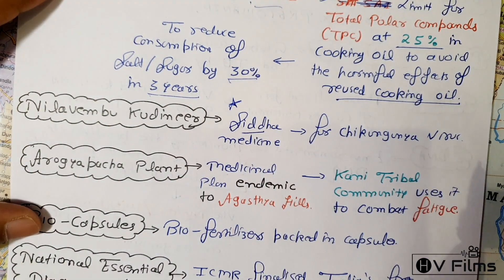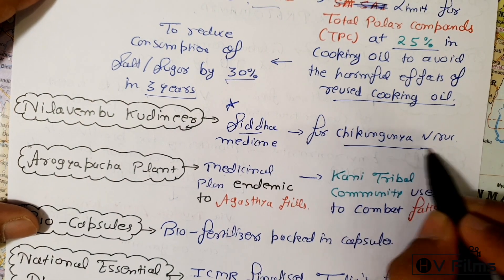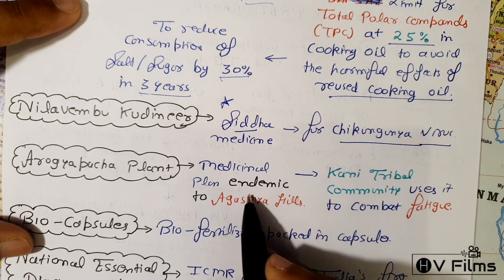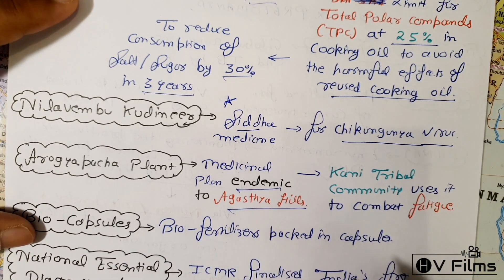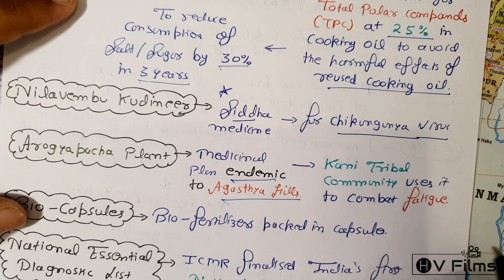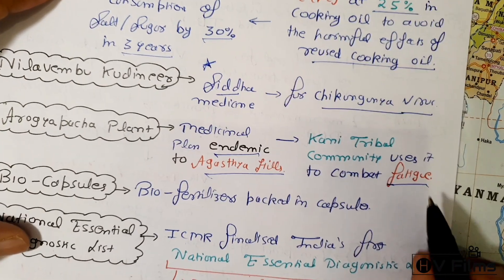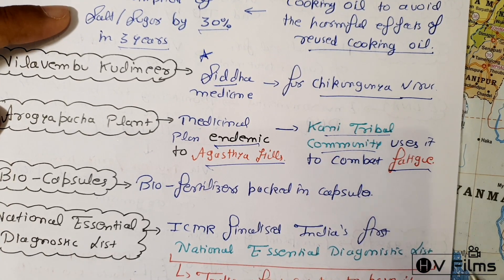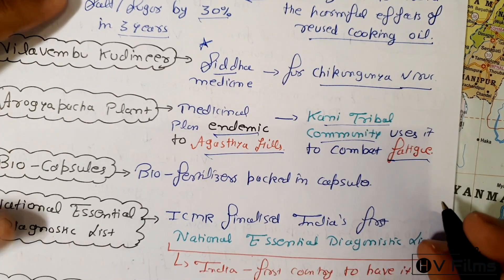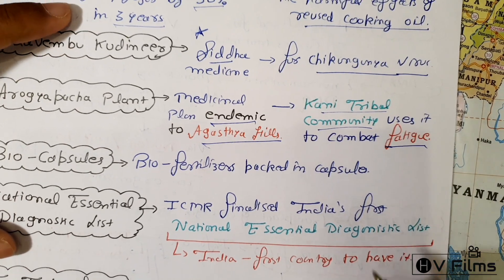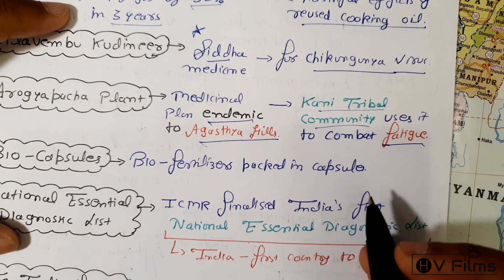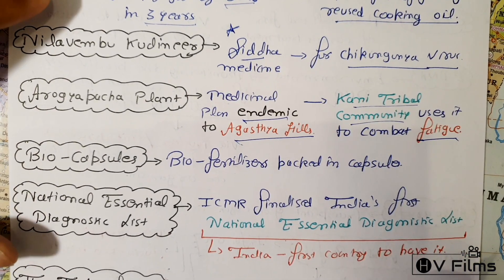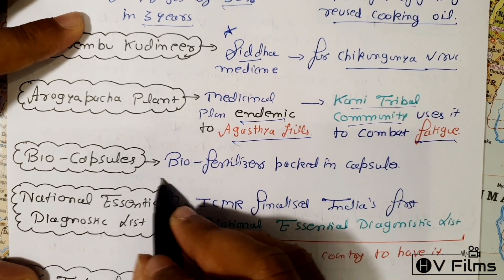Nila vembu kudinir is a Siddha medicine used to treat chikungunya. Arogyapacha is a medicinal plant endemic to the Agasthya Hills, used by the Kani tribal community to treat fatigue. Biocapsules are biofertilizers packed into tiny capsules that are placed into soil.